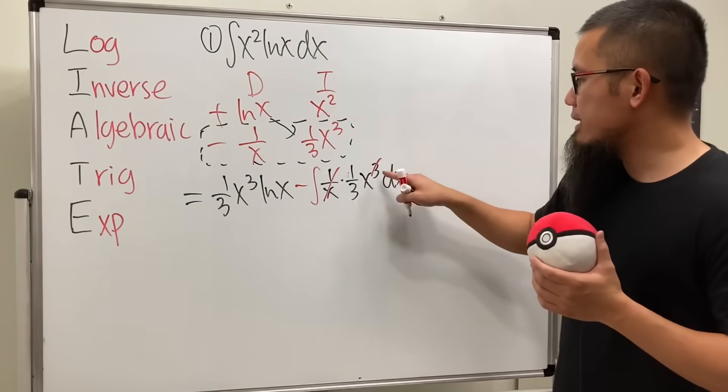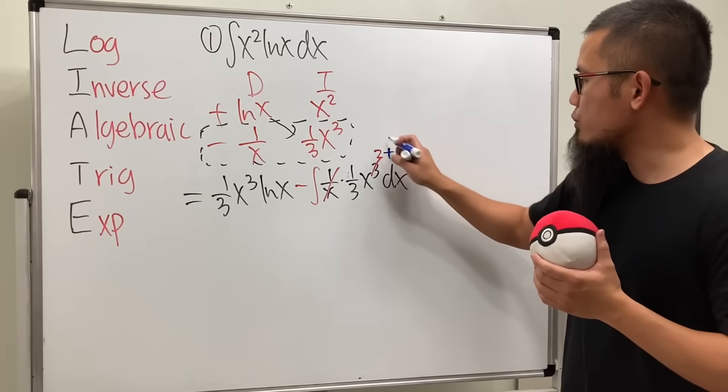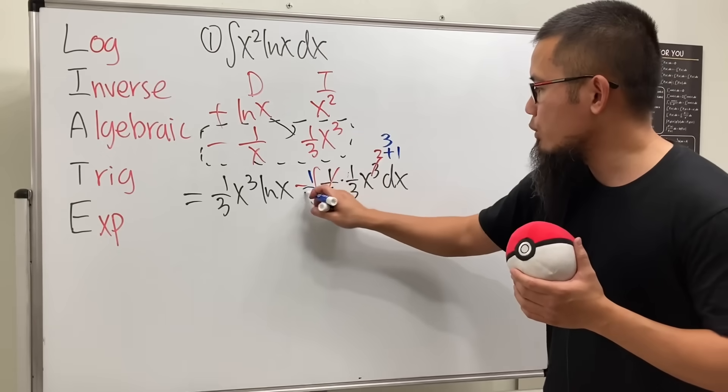Cancel this out. And this right here becomes a 2, right? And of course, to integrate this, we'll just add 1 to the power, which is 3, divided by the new power. So we have 1 over 3.